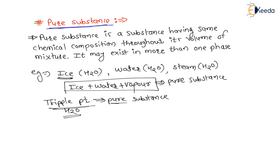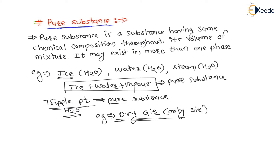Dry air is also a pure substance. Additionally, air plus petrol vapor is considered a pure substance, because its chemical composition is homogeneous throughout.